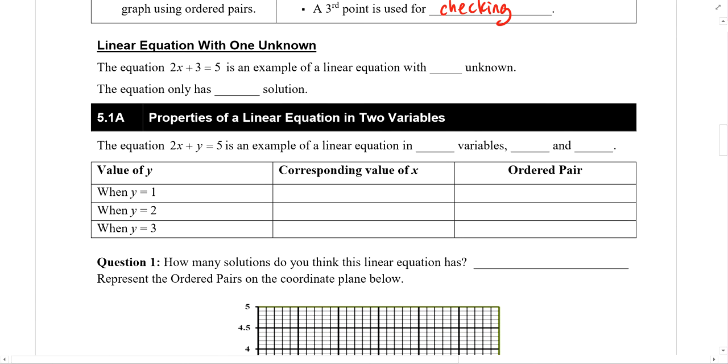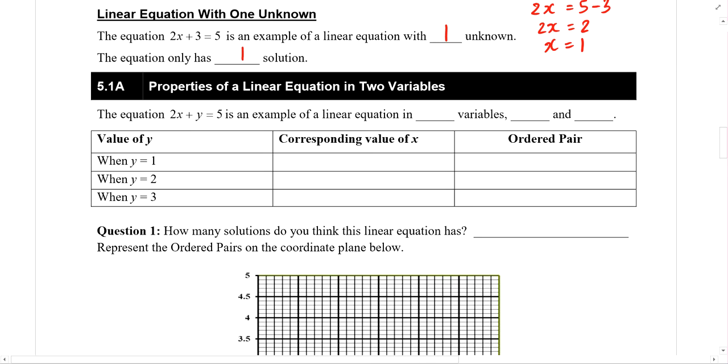We are also familiar with equations, linear equations with one unknown. Over here, we have an equation. The only unknown here is x. So there is only one unknown. In this case, it will only have one solution. Only one value of x will satisfy the equation. We can easily find out what that value of x is. So 2x equals 5 minus 3, 2x equals 2, x must be equals to 1. We can try other values of x. Place it into the equation. You will see that the left-hand side will not be equal to the right-hand side for any other value of x other than x equals 1.